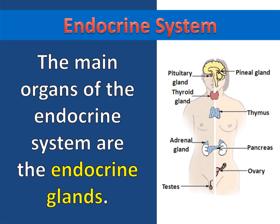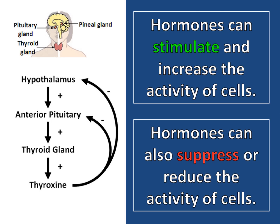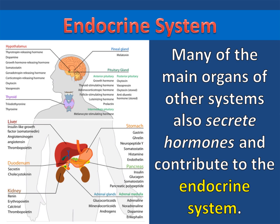Hormones are chemical signals that travel through the blood and affect the activity of cells around the body. Hormones can stimulate and increase the activity of cells, and hormones can also suppress or reduce the activity of cells.